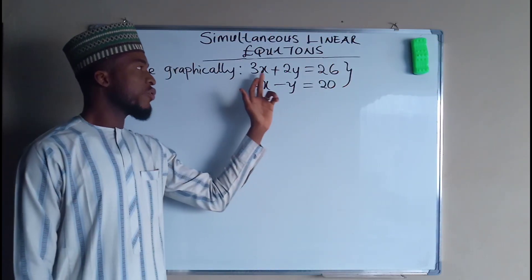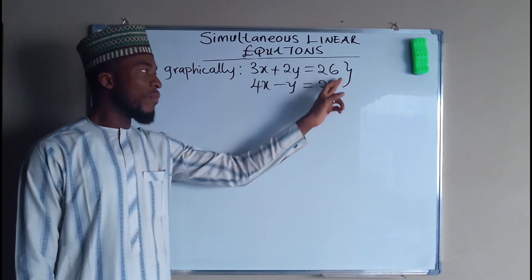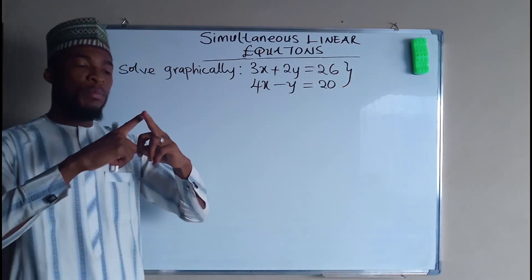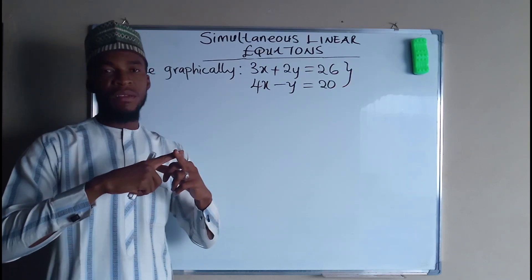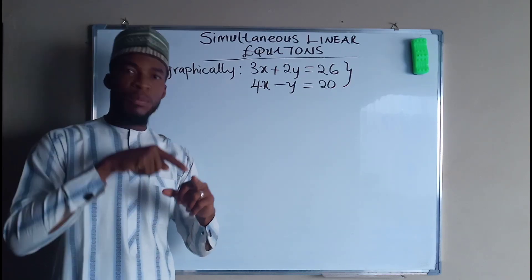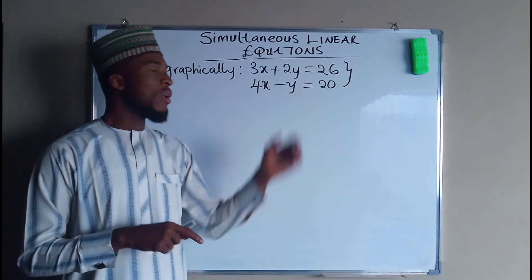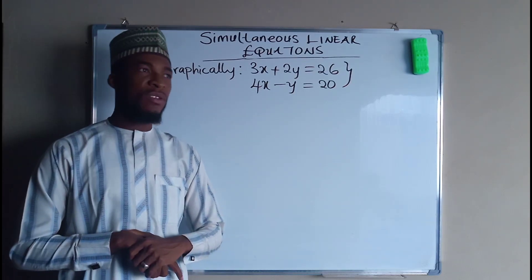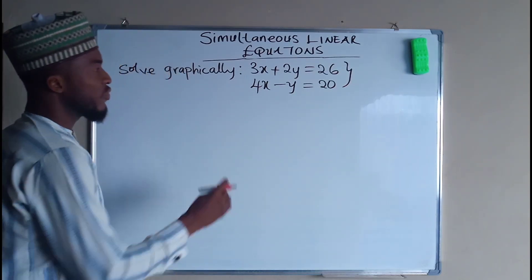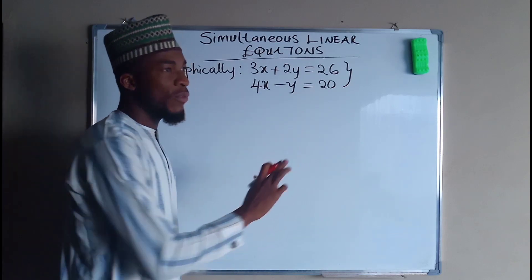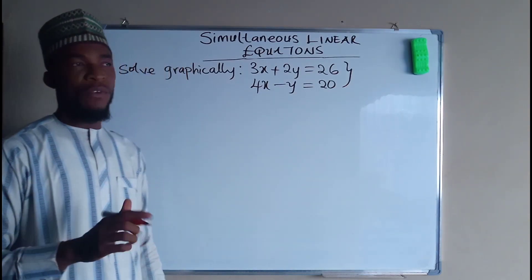You need to construct a linear graph of each of these equations. The point where the two lines intersect, the coordinate at that particular point is the solution to these simultaneous equations. But before you construct the graph of this, you need to transform each of them into slope-intercept form.